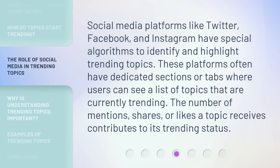Social media platforms like Twitter, Facebook, and Instagram have special algorithms to identify and highlight trending topics. These platforms often have dedicated sections or tabs where users can see a list of topics that are currently trending. The number of mentions, shares, or likes a topic receives contributes to its trending status.